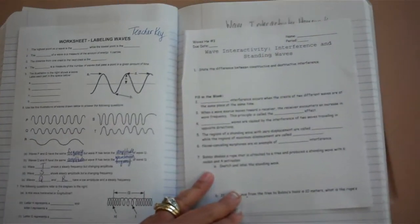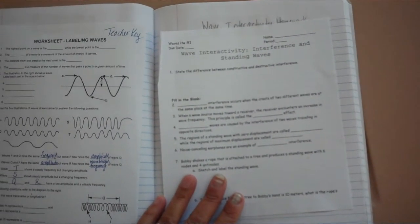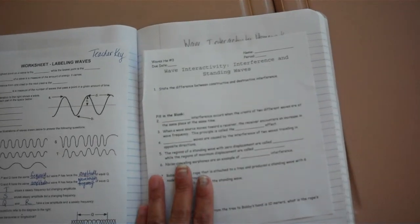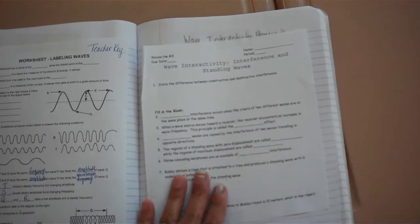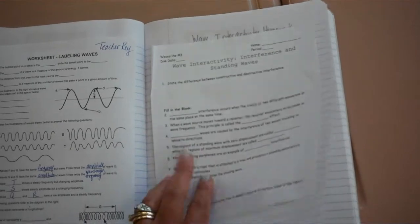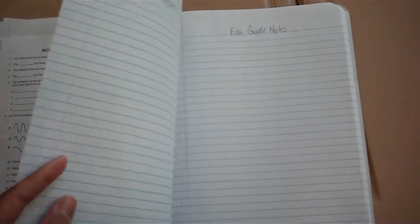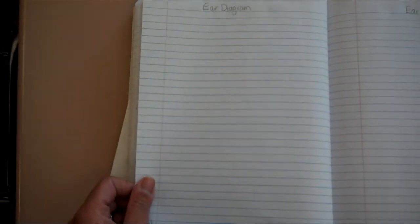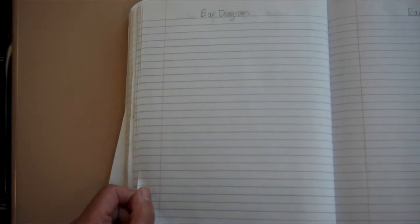Page 100 should be your wave interactivity, interference and standing waves, homework sheet that you had to do. There's a video that I assigned to you that goes along with this from Discovery Education, and remember your Discovery Education password is WCP and your lunch number, and your username is WCP and your lunch number, and then your password is just your lunch number.